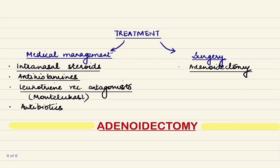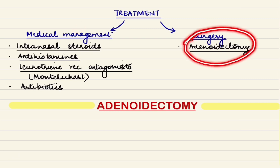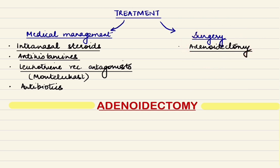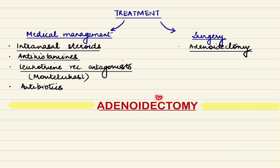Treatment can be medical or surgical. Traditionally adenoidectomy was considered the only treatment for adenoid enlargement. However, there is good evidence that intranasal steroids such as fluticasone or mometasone are helpful. Antihistamines and leukotriene receptor antagonists such as montelukast or zafirlukast can also be used given the link with allergic rhinitis. Antibiotics can be used in cases of acute infection. A detailed video on adenoidectomy will be made soon.